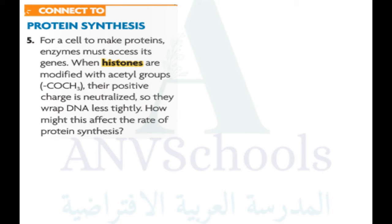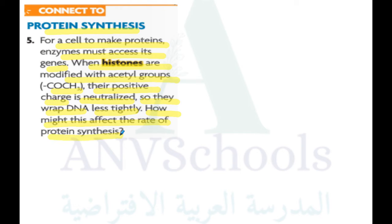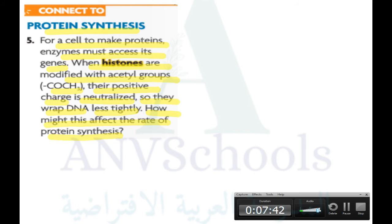Protein synthesis. For a cell to make proteins, enzymes must access its genes. When histones are modified with acetyl groups, their positive charge is neutralized, so they wrap DNA less tightly. How might this affect the rate of protein synthesis?